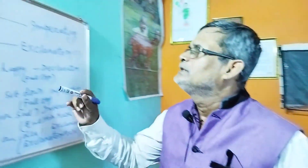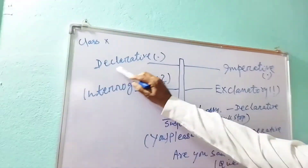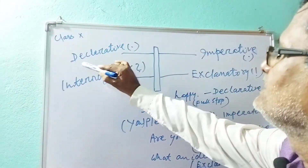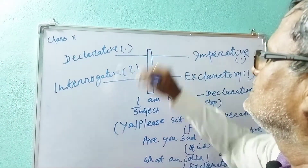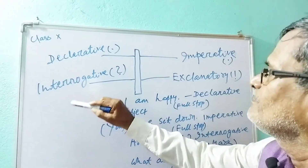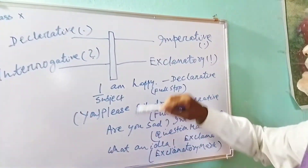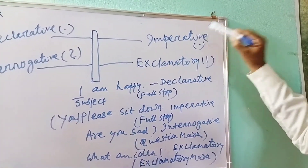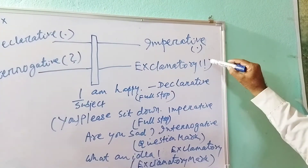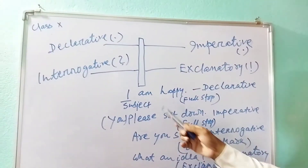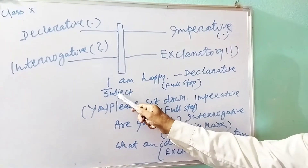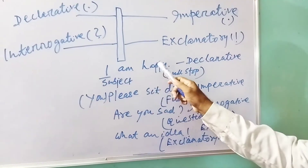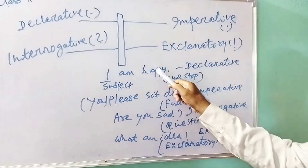Now I will teach each one. A declarative sentence begins with a subject and a capital letter, and ends with a full stop. For example: 'I am happy' — 'I' is the subject, so in a declarative sentence the subject must be there, and it ends with a full stop. Other examples: 'You are a teacher,' 'He is going,' 'She is happy.'